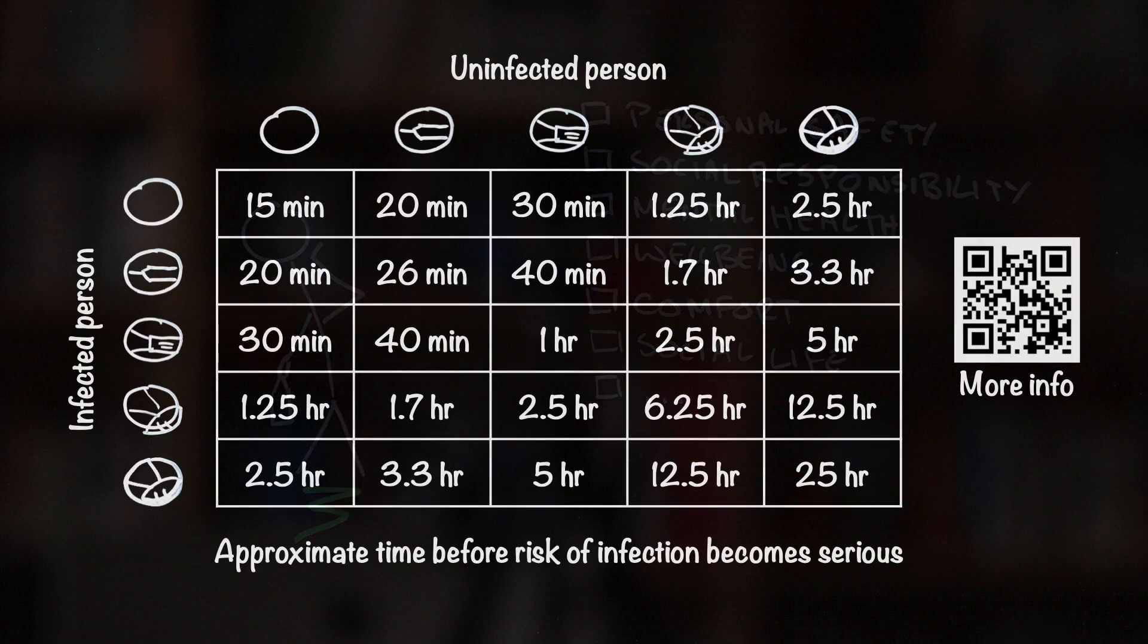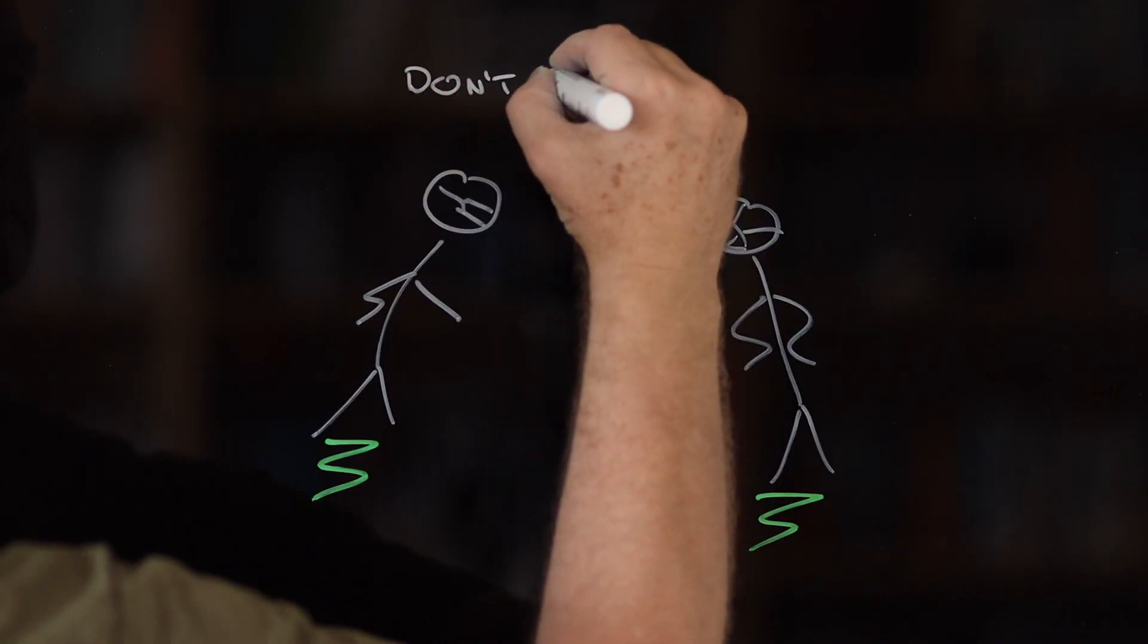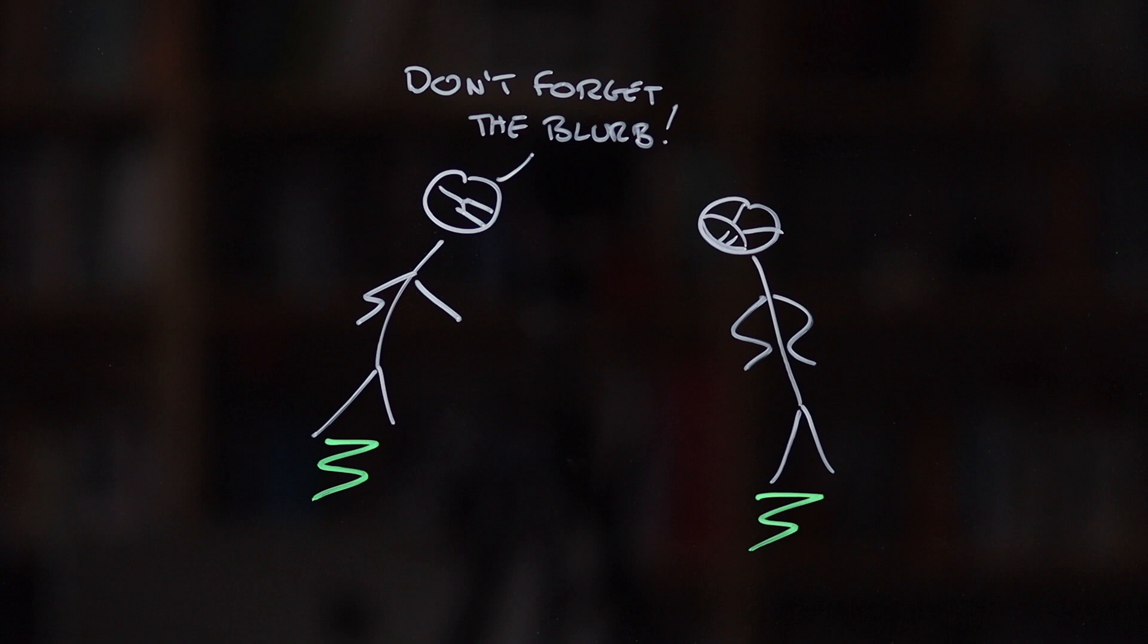For completeness, here's the full set of estimated times before the infection risk becomes serious for different combinations of mask wearing. Be warned, though, that it comes with a really important proviso, and that is that these are just rough estimates. And the most important takeaway is the size of the differences, not the precise numbers. For more information, please do check out the links in the description below. And as always, stay safe.